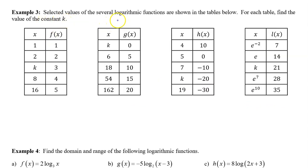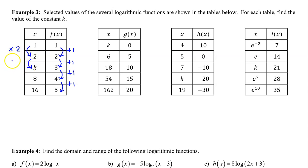Example 3: Selected values of several logarithmic functions are shown in the tables below. For each table, find the value of the constant k. For f of x, the output values are equally spaced, so for logarithmic functions the input values will vary multiplicatively — they will have a common ratio. The first ratio is 2 divided by 1, which is 2. So the next ratio must also be 2. Multiplying 2 by 2 gives us k equals 4. Carrying on, 4 times 2 is 8, and the pattern continues.